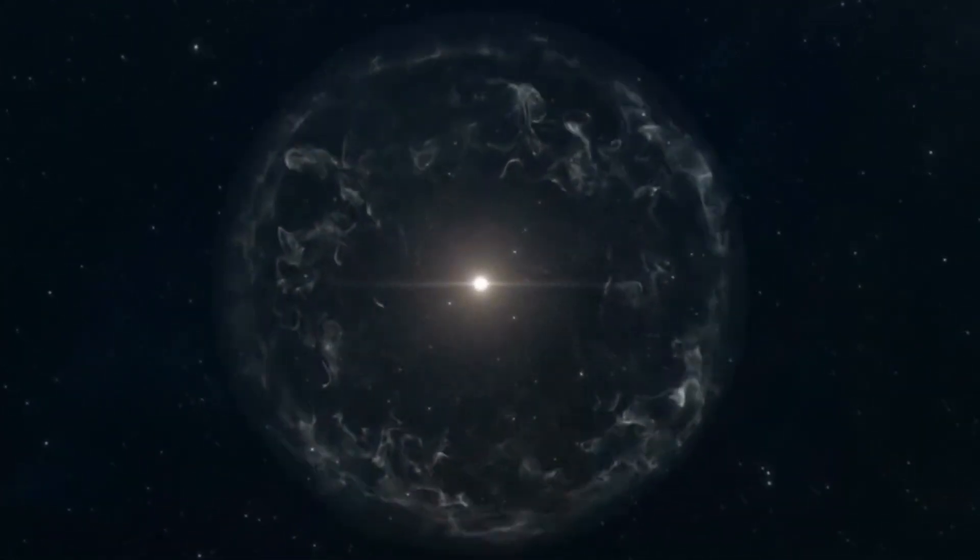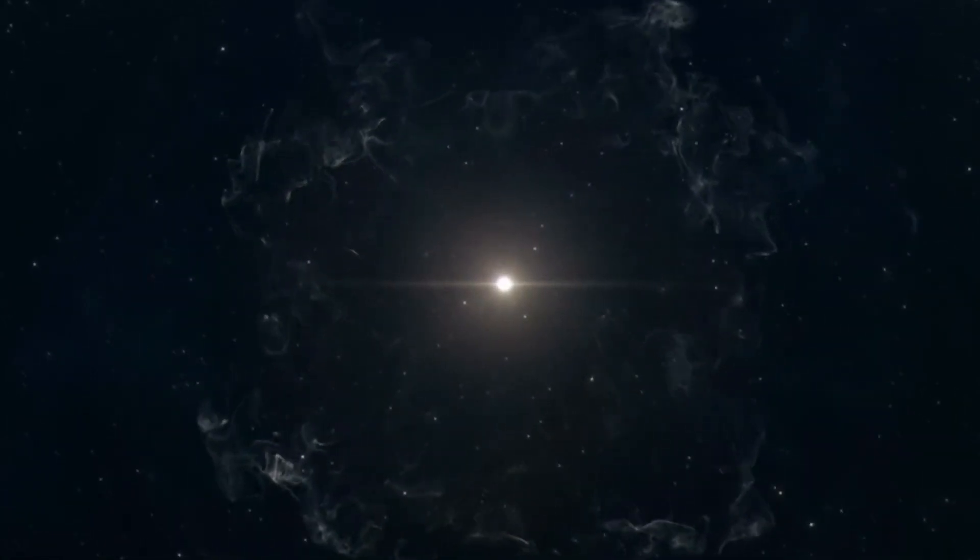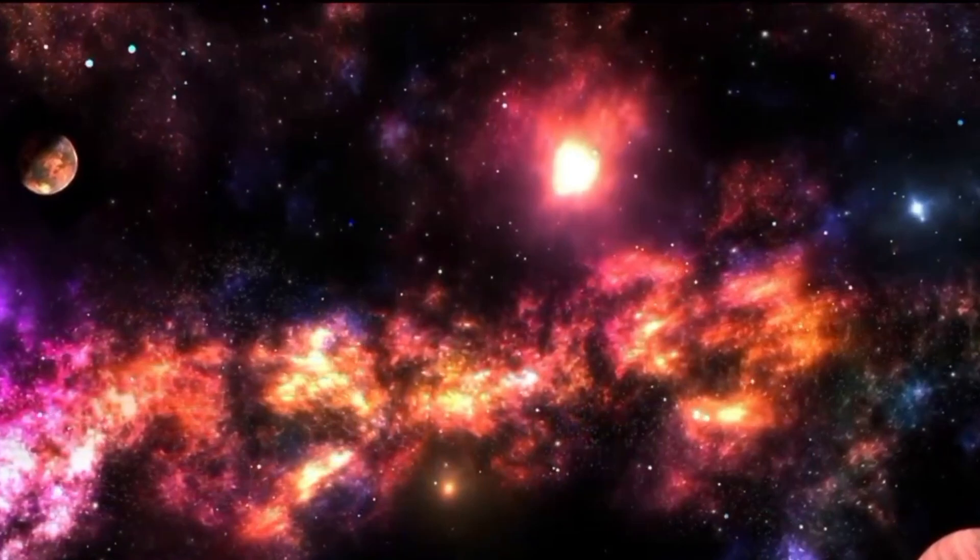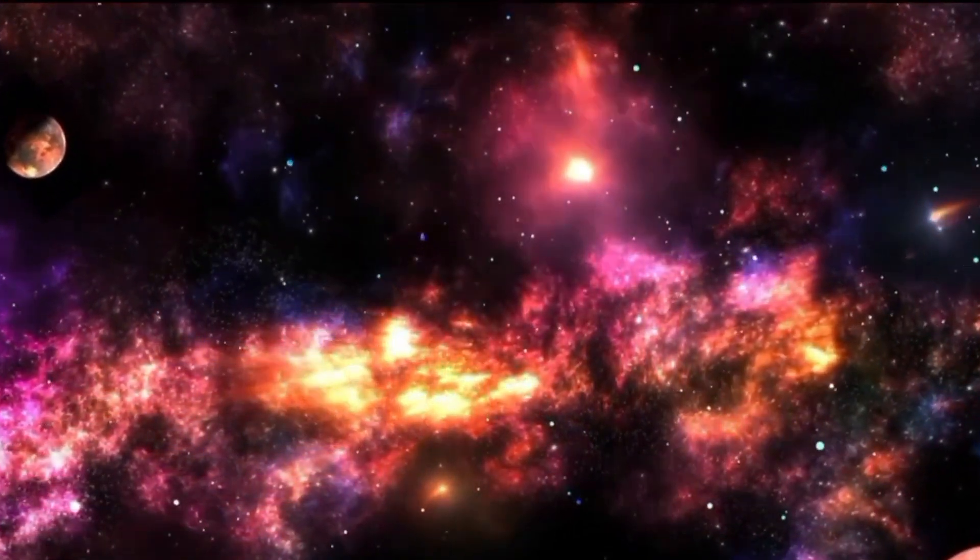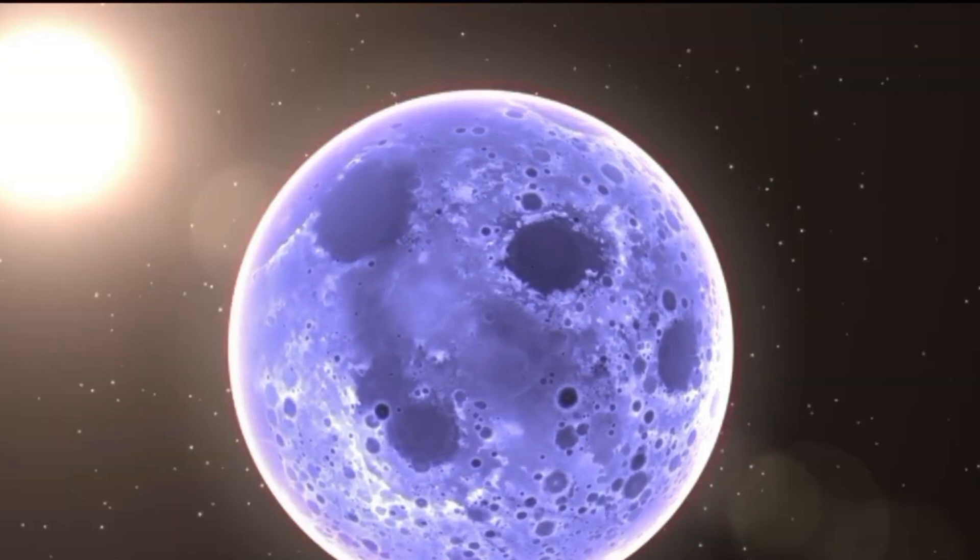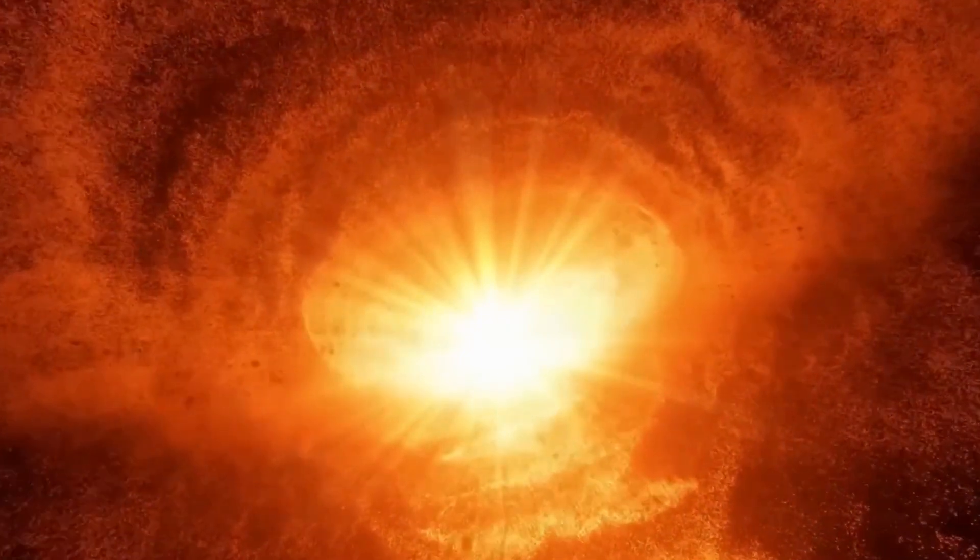One of the primary reasons for believing that Betelgeuse might go supernova is its age and stage in the stellar life cycle. As mentioned earlier, massive stars like Betelgeuse have shorter lifespans than smaller stars. They burn through their nuclear fuel at an accelerated rate. Betelgeuse has already exhausted the hydrogen in its core and has moved on to burning heavier elements. Each successive phase of fusion produces less energy and lasts for a shorter duration.